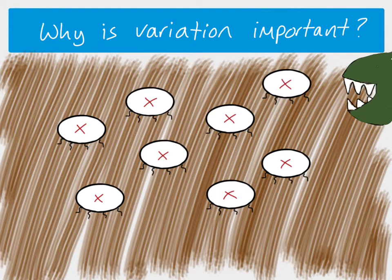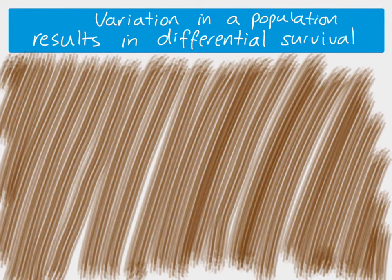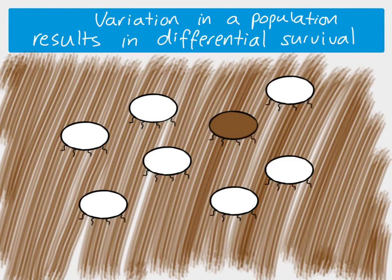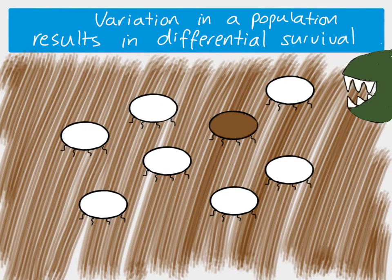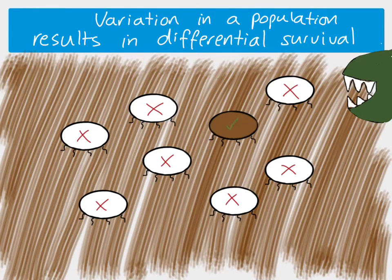In this situation, the fact that there is no variation is detrimental — that population is at risk of being completely wiped out. Variation is important because it results in something called differential survival. If we have a population with some variation — most are white but one individual is brown — the predator will eat the white ones, but the brown individual, because it's got a different phenotype, is going to survive.